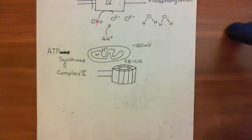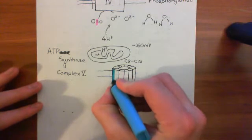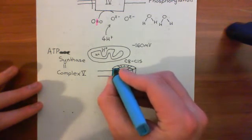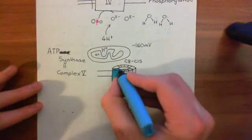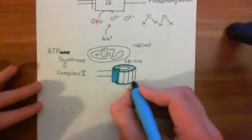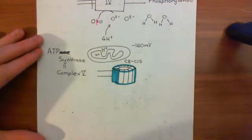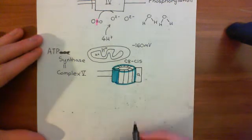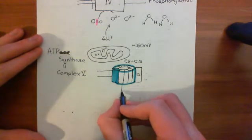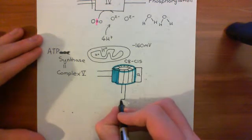Let me colour the C subunits in blue here — each individual C subunit outlined in blue. That's not all there is to ATP synthase; that's just one portion of it. Next to it we then have another portion known as the A subunit. I'm going to split this up into the F0 and the F1 portions in a moment. I'll draw the full thing first and then explain which bits are F1 and which bits are F0.